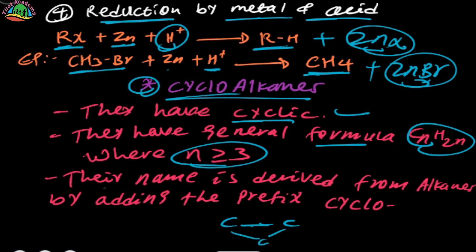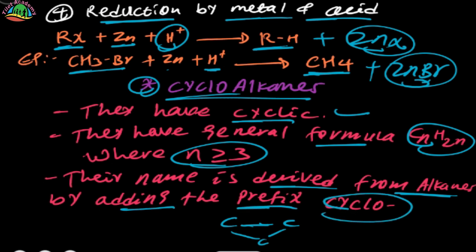Their name is derived from the parent alkane by adding the prefix 'cyclo'. For example, the cyclo prefix is added to the alkane name.